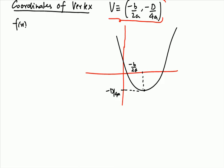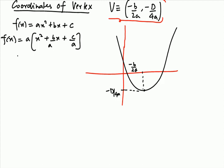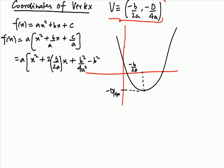Let f(x) be a quadratic polynomial ax² + bx + c, and we will express f(x) in perfect square form. For that, we take 'a' common to get x² + (b/a)x + c/a. In the next step, we multiply and divide by 2 — we do this because we want this term to act as the 2ab term in a perfect square. We also add and subtract b²/4a².